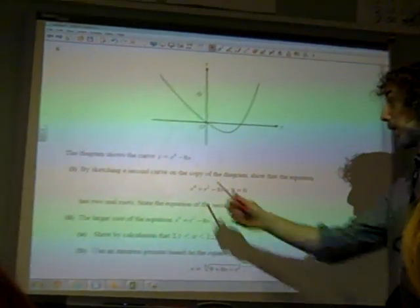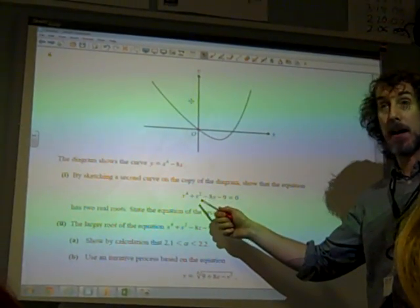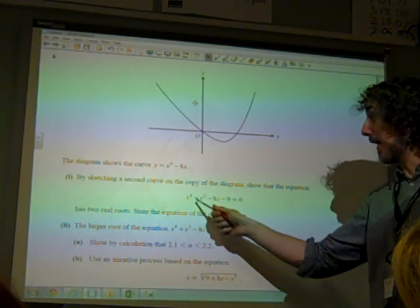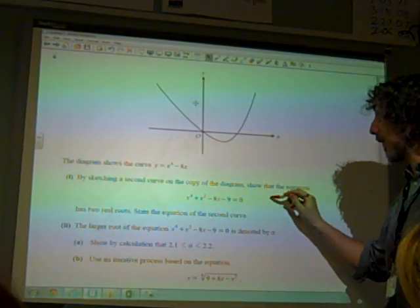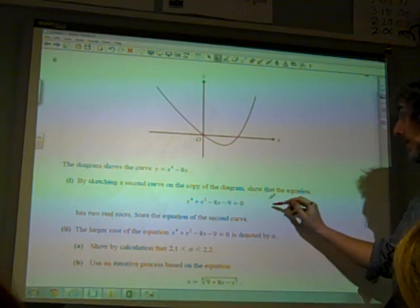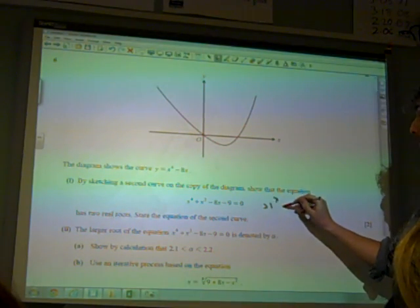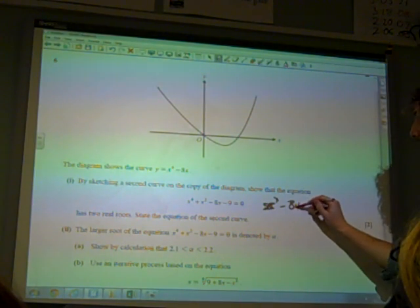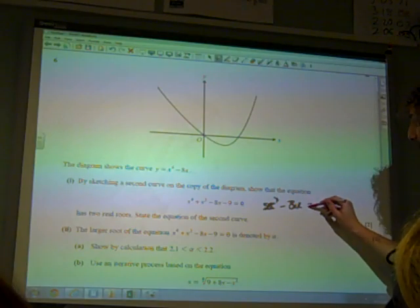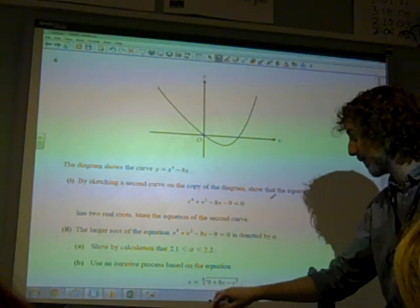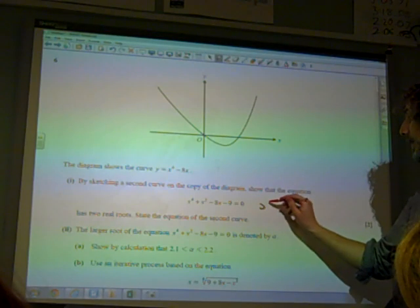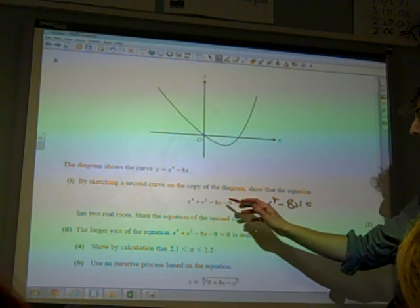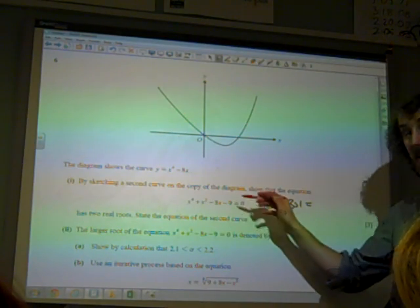Before we do any sketching, we've got to recognize the link between that and that. I think most people spotted quite nicely that if we rearrange this equation here, we've got x to the 4 minus 8x equals 9 minus x squared.